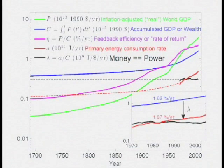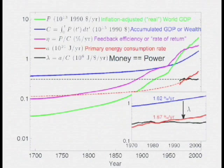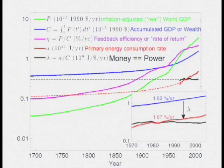To come back to this plot right here, one can actually calculate, based on observations, this rate of — this feedback loop — this rate of return in the system. The rate of return in the system is here, this purple line. The rate of return is the ratio of GDP to the wealth — what you get back from the bank relative to what's in the bank. This purple line has increased from about 0.1% per year in 1700 to 2.2% per year.